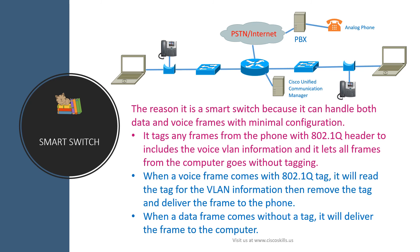The smart switch tags any frames from the phone with an 802.1Q header to include the voice VLAN information, and lets all frames from the computer pass without modification. When a voice frame arrives with an 802.1Q tag, it reads the tag for VLAN information, removes the tag, and delivers the frame to the phone. When a data frame arrives without a tag, it delivers the frame directly to the computer.